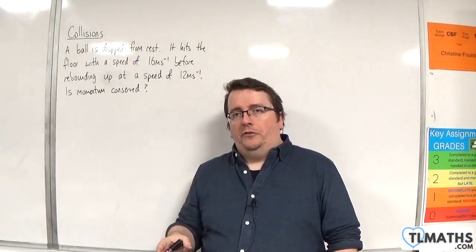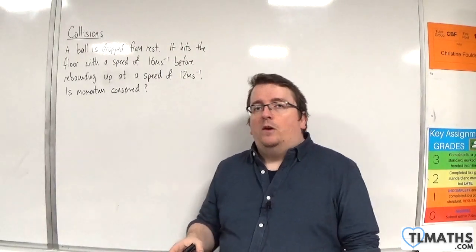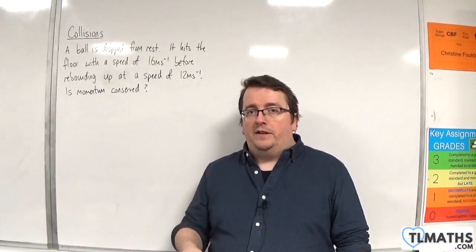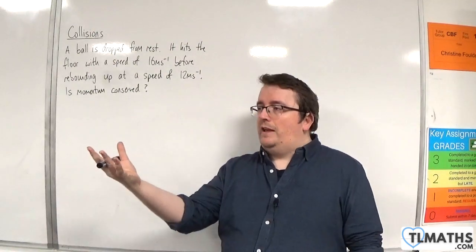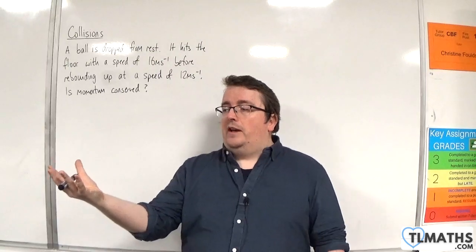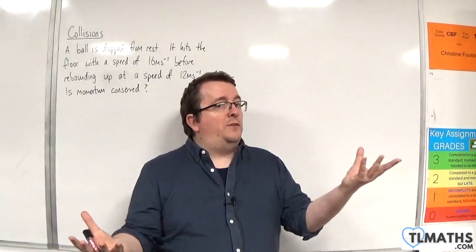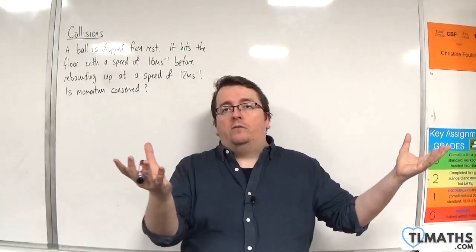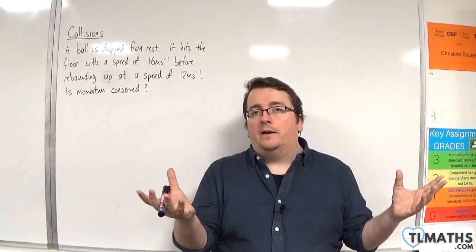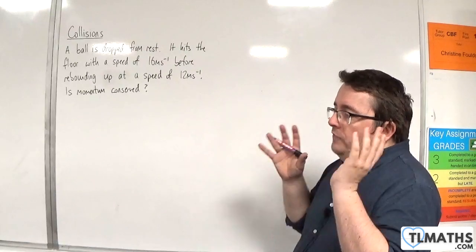Now when we've looked at the conservation of linear momentum, we've considered two particles colliding. That's been quite easy to visualize because you've had a particle that has a mass of 5 kilos and another particle that has a mass of 6 kilos. They collide and we can imagine them shooting off in different directions at different speeds.